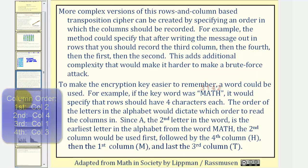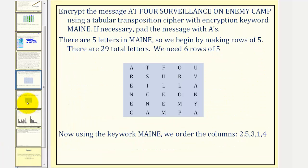Let's take a look at two more examples. We want to encrypt the message given here using a tabular transposition cipher with encryption key MAINE. If necessary, pad the message with A's. Notice here, there are five letters in MAINE, so we begin by making rows of five characters, so we'll have five columns. One, two, three, four, five.